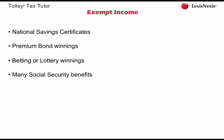Child benefit is not taxable, although from the 7th of January 2013 a high income child benefit charge applies where a recipient or their partner has adjusted net income in excess of £50,000. State pension and jobseeker's allowances are taxable income. Scholarship awards are exempt, as is any income from ISAs — Individual Savings Accounts. Dividends paid on the first £200,000 of venture capital trust shares acquired in any tax year are also exempt from income tax.